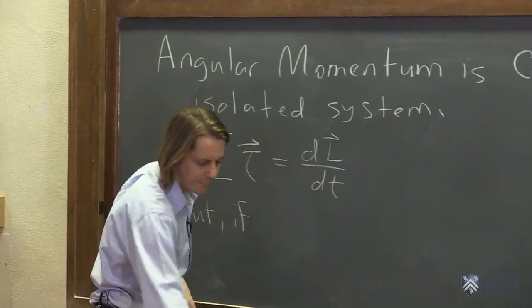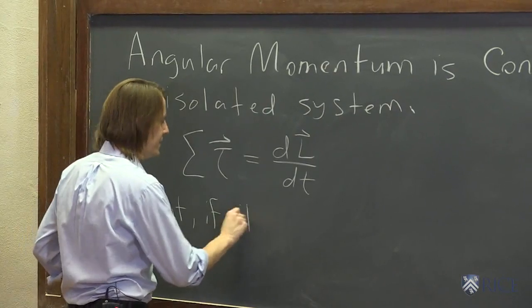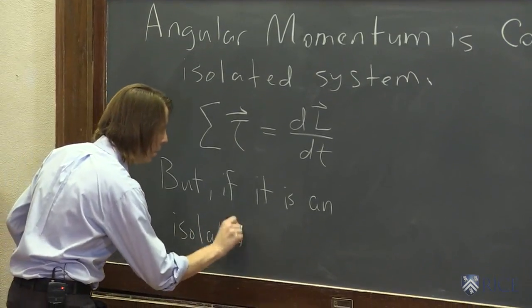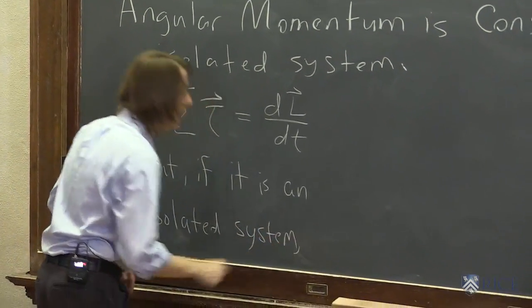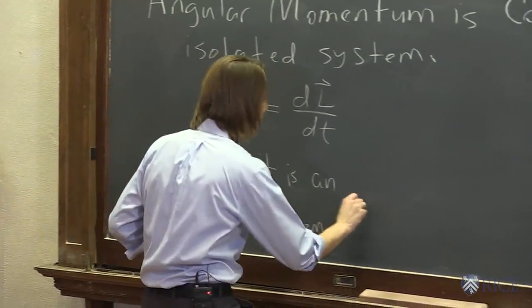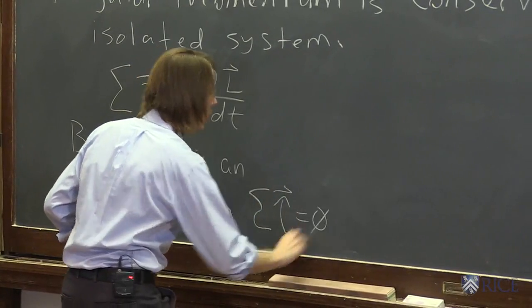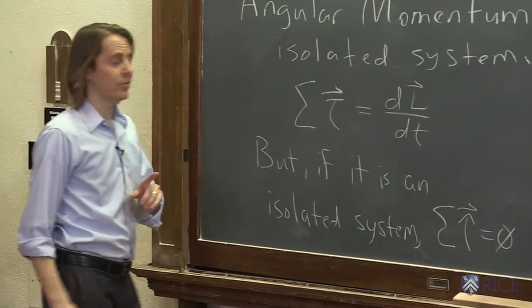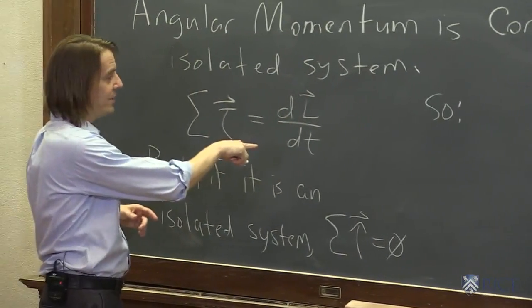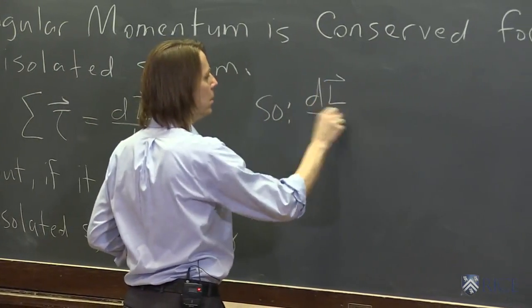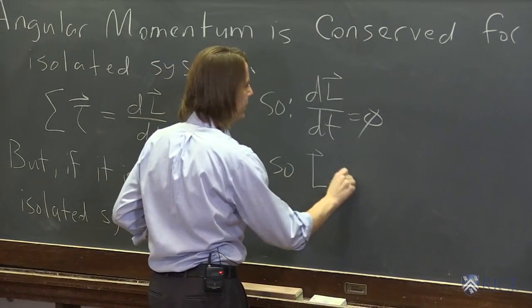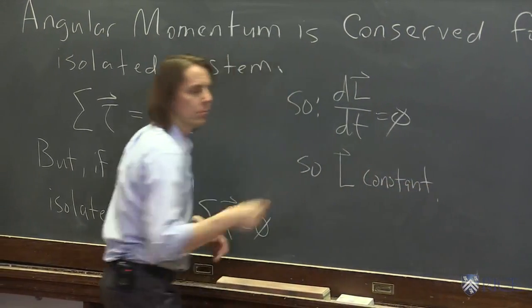But if it is an isolated system, then there can be no external torques, there can only be internal. Therefore, the sum of the torques is zero. Sum of the torques is zero, so then what does that mean? That means dL/dt is zero, so L is constant. So it's conserved.